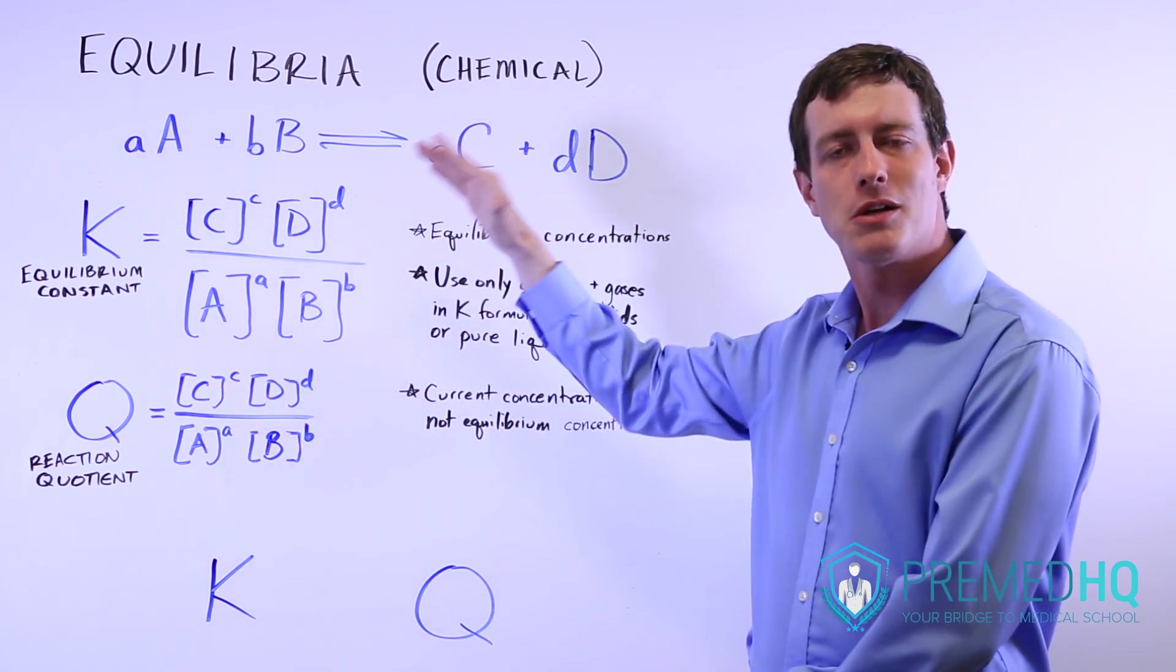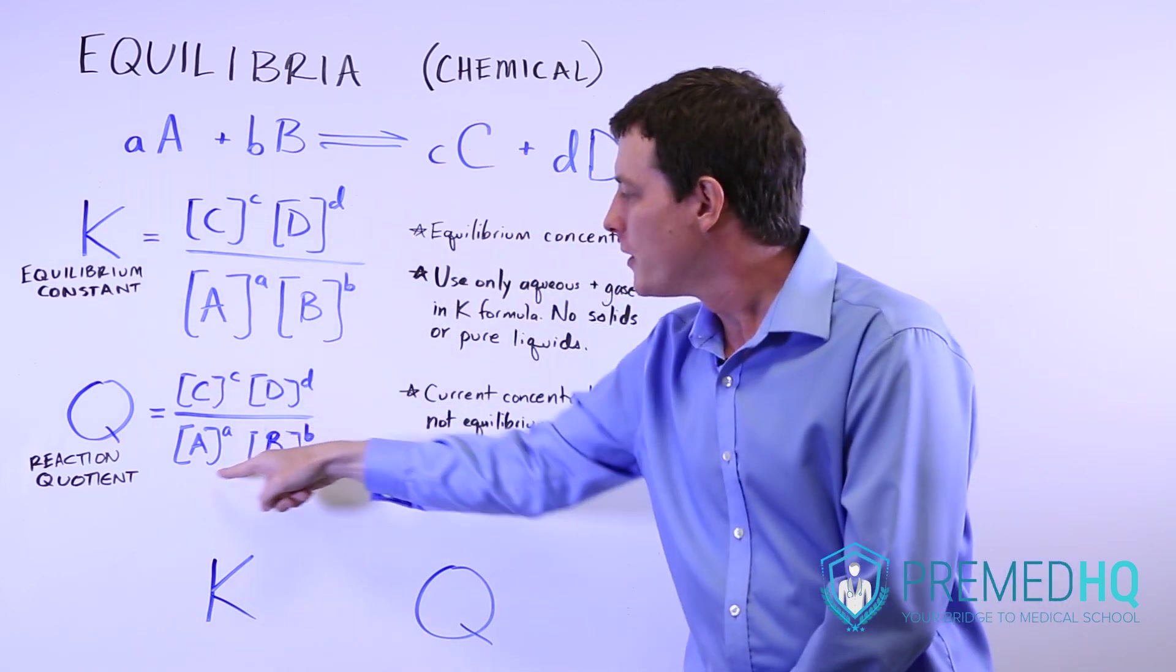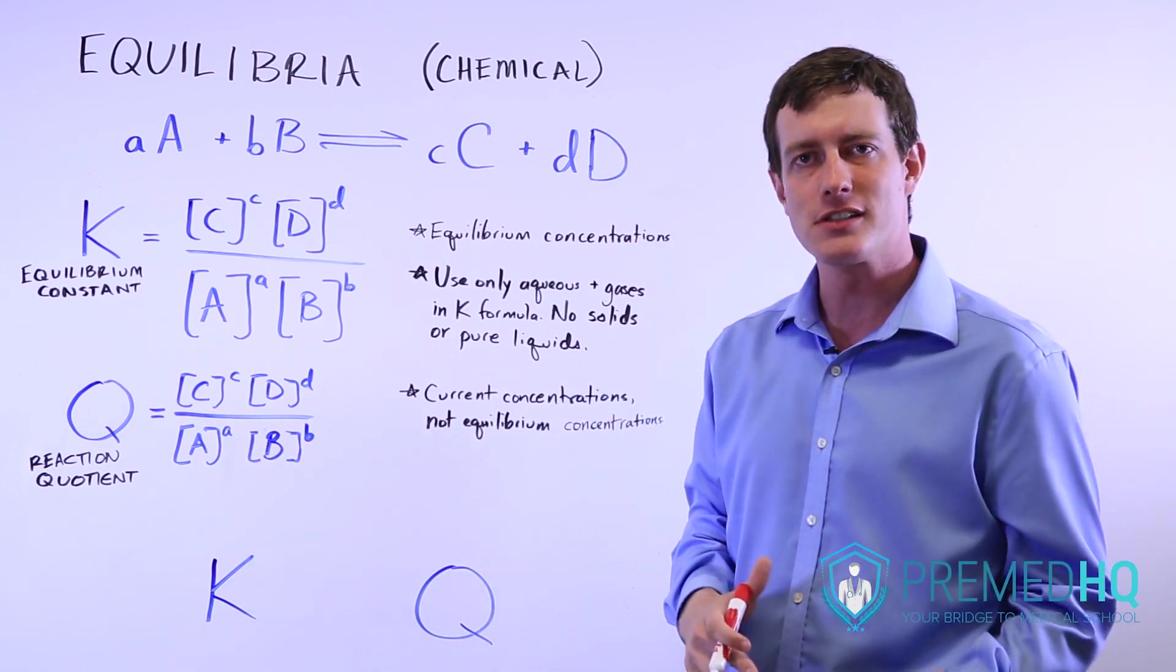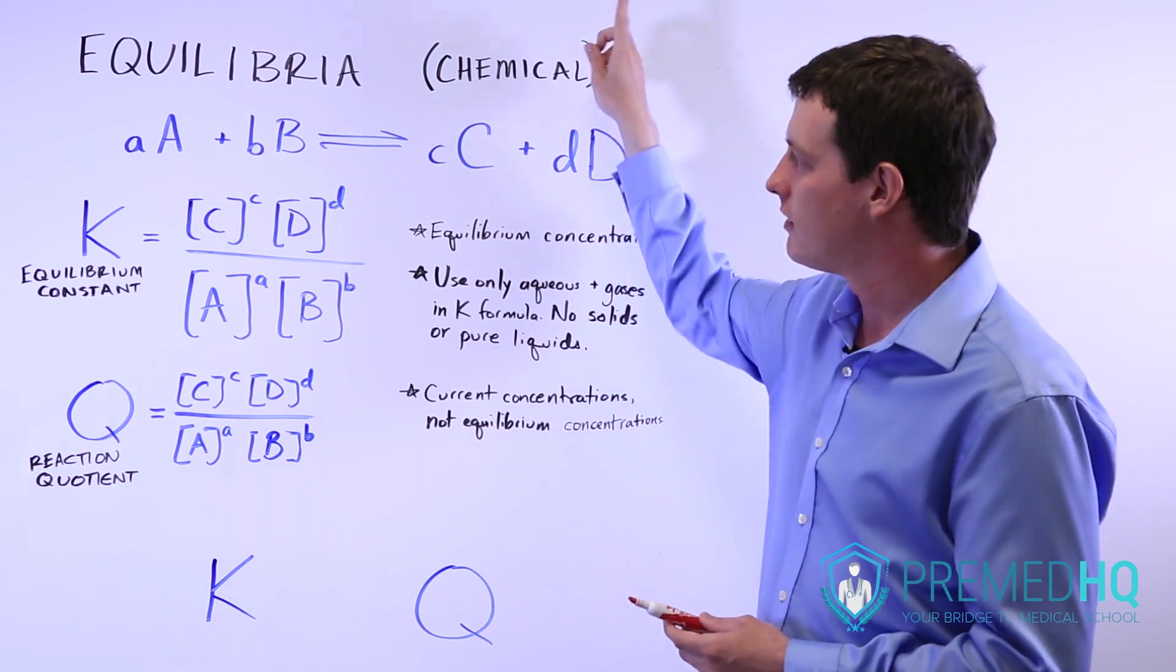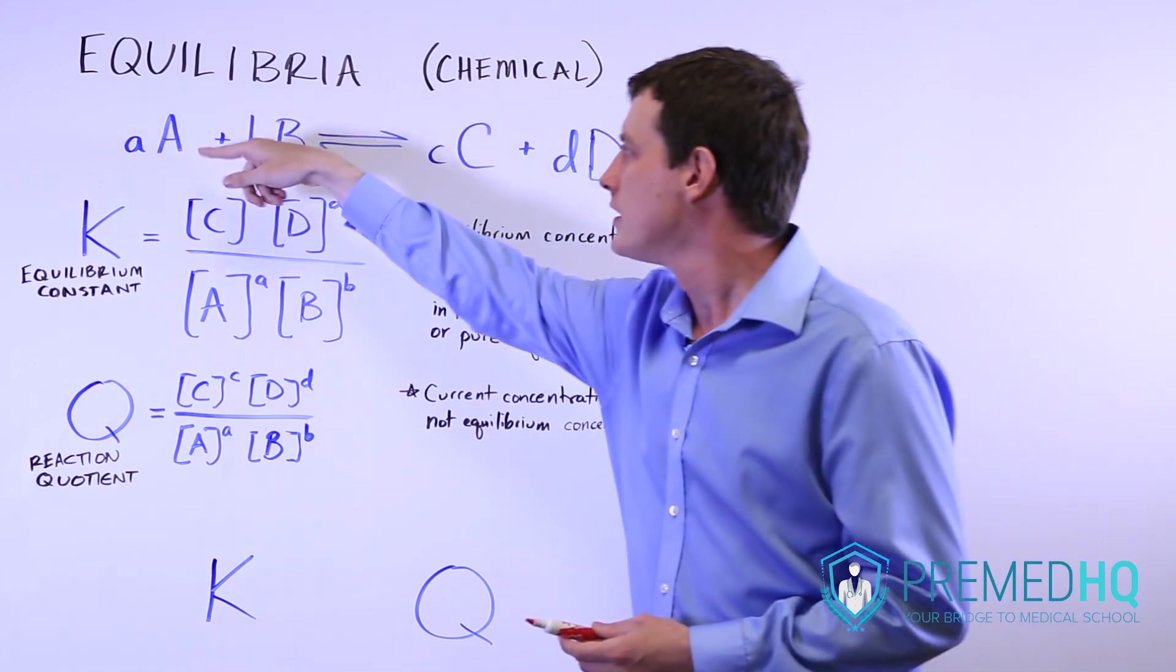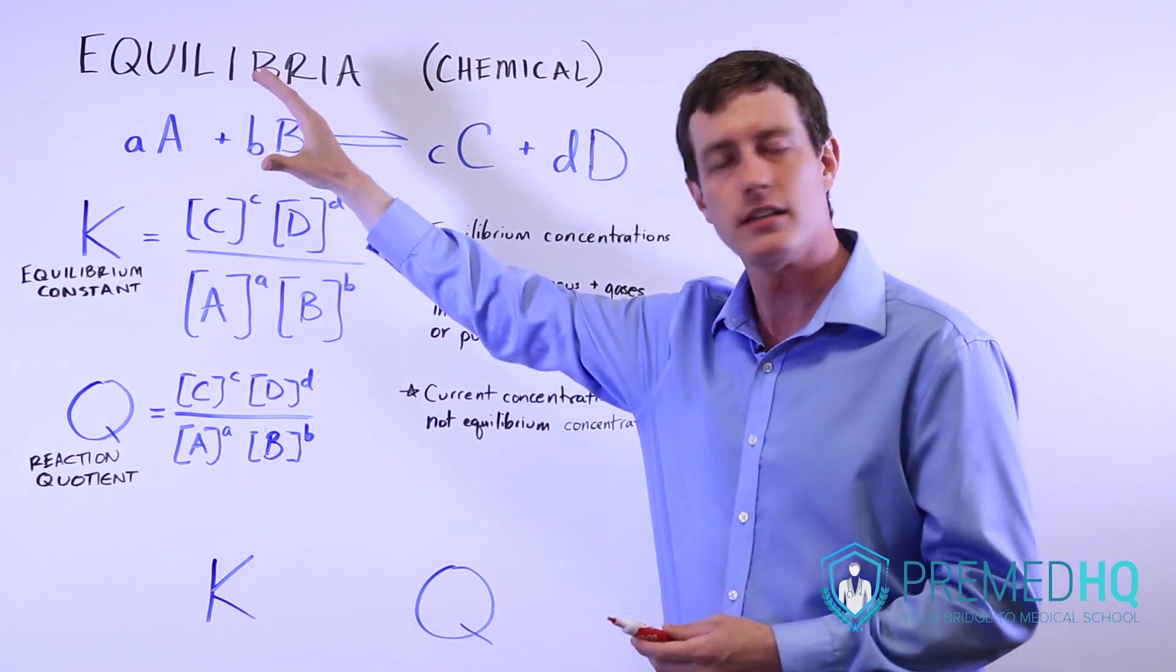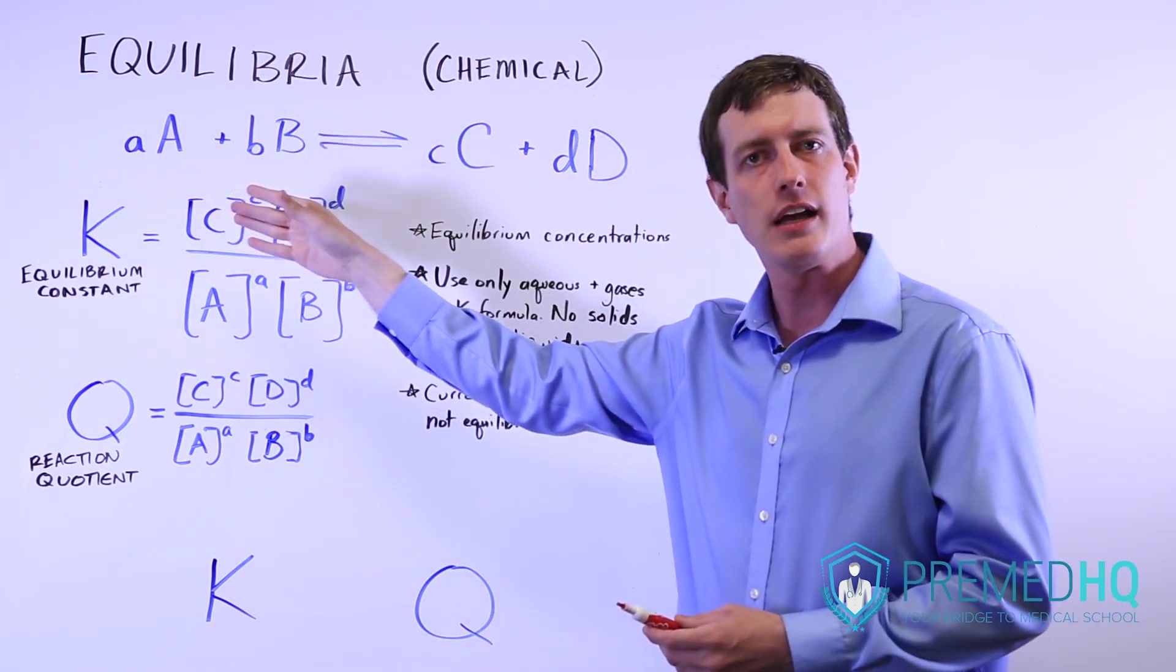It either means this side already has too many or this side doesn't have enough yet. And so what you'll see is the reaction will move to the left because Q will always approach K.